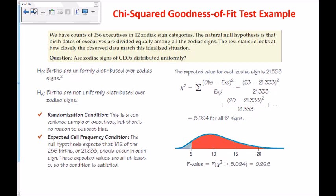The two important conditions: for the randomization condition, this is a convenient sample of executives but that's no reason to suspect bias. For the expected cell frequency condition, 1/12 times 256 is 21.33, and all of those are bigger than 5, so we're okay. We type actual counts in list 1 and 21.33 for each of the 12 in list 2, run the chi-squared GOF test, and find a p-value of 0.926. With a p-value that high, we fail to reject the null hypothesis — there is not enough evidence to conclude that births are not uniformly distributed over zodiac signs.